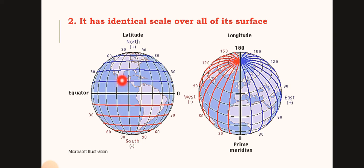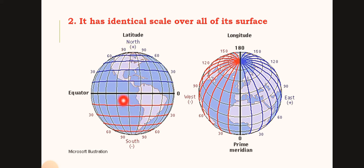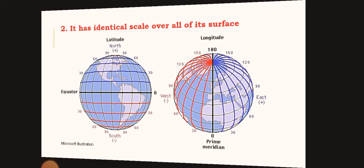The size of the earth is represented in the shape of the earth. It has identical scale over its entire surface.